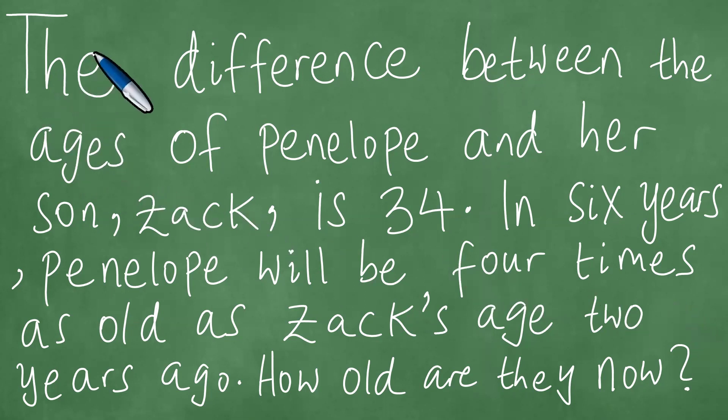We proceed to read the word problem. The difference between the ages of Penelope and her son Zack is 34. In six years, Penelope will be four times as old as Zack's age two years ago. How old are they now?